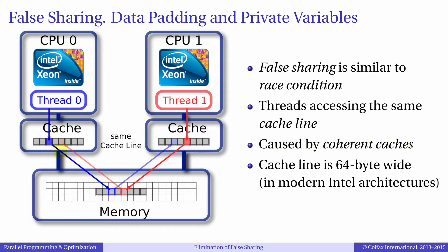When Intel processors access memory they must read or write an entire cache line, which is 64 bytes long. Even when a core requests reading or writing of only a 4-byte or an 8-byte number, the entire cache line must be read or written. When multiple threads access the same cache line but modify different parts of it, cache coherency protocols may need to change the state of the cache line to guarantee coherency. As a result, some threads may have to wait while other threads complete their write operations.